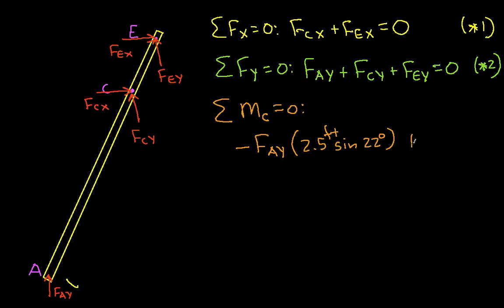And then we'll have plus 1 foot times sine 22 degrees. That's basically the distance from point C to the line of action of FEY. And this is positive because FEY is inducing a counterclockwise rotation. So we have to put FEY in here. And then minus FEX, which is inducing a clockwise rotation. And its moment arm is 1 foot cosine 22 degrees. And this is equal to zero.